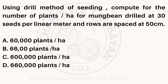Using the drill method of seeding, compute for the number of plants per hectare for mung bean drilled at 30 seeds per linear meter in rows spaced at 50 centimeters. A. 60,000 plants per hectare. B. 6,600 plants per hectare. C. 600,000 plants per hectare. D. 660,000 plants per hectare.